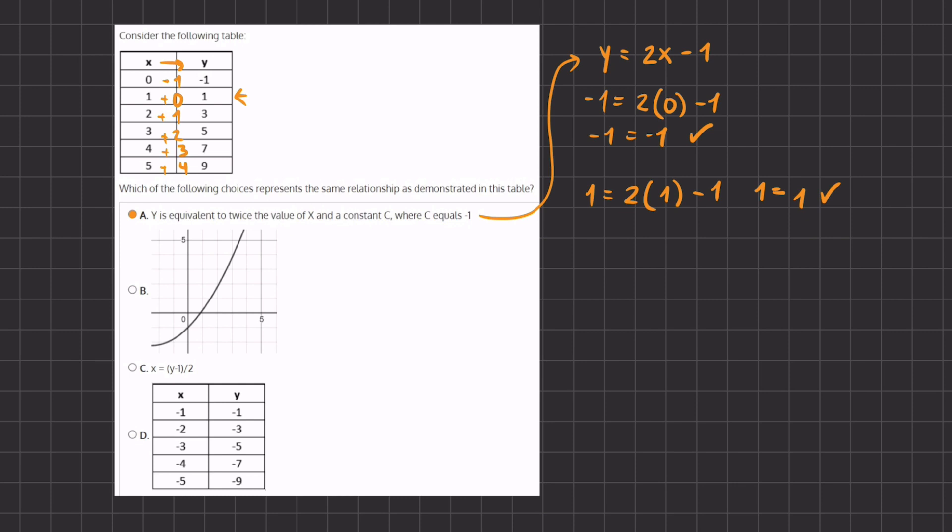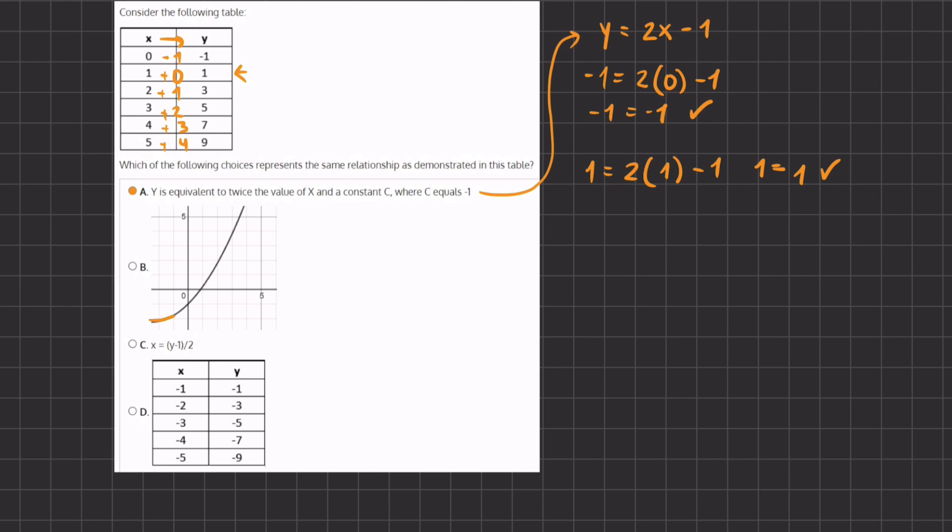If we take a look at B, B has a curved line for its graph and we seem to be having a linear equation, therefore B can be disqualified. But we can also check by choosing one of the points on the graph.